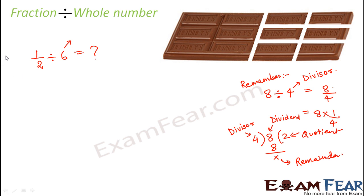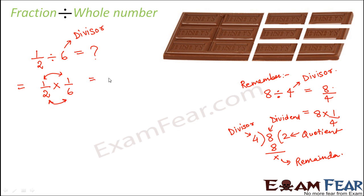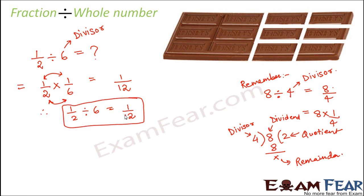In division of fractions, the divisor plays an important role. Here six is the divisor, so one-half divided by six is the same as one-half multiplied by the reciprocal of six, which is one-sixth. Numerator multiplied by numerator, denominator multiplied by denominator gives one over twelve. Therefore, one-half divided by six equals one-twelfth — meaning each friend received one-twelfth of the chocolate.